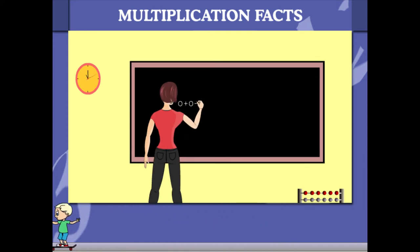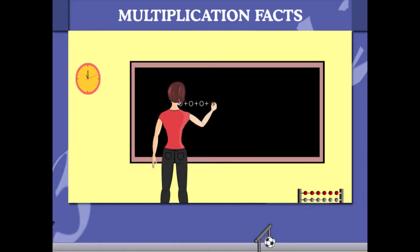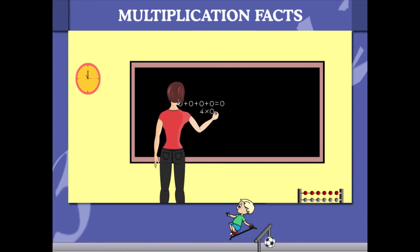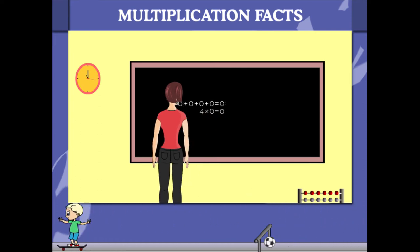Add 4 zeros and the answer is 0. Multiply 0 and 4, the answer is 0.